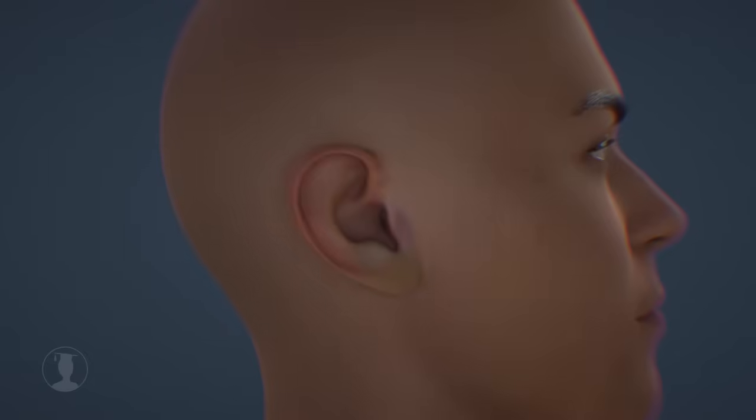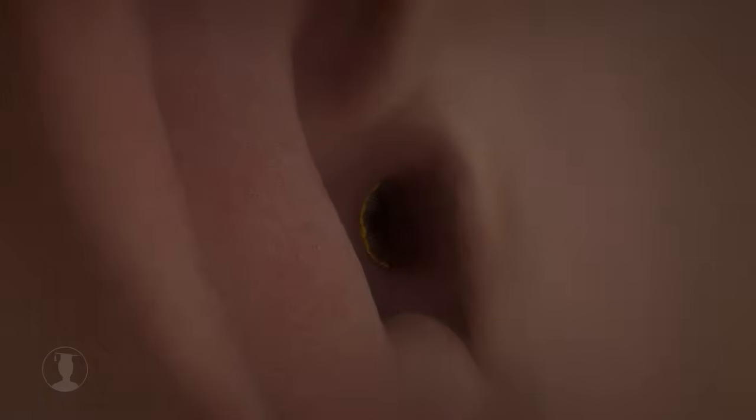Now let's look at the external auditory canal, which is also part of the outer ear. There are special hairs at the entrance to the external auditory canal, which are intended to protect the inside of the ear from small animals.